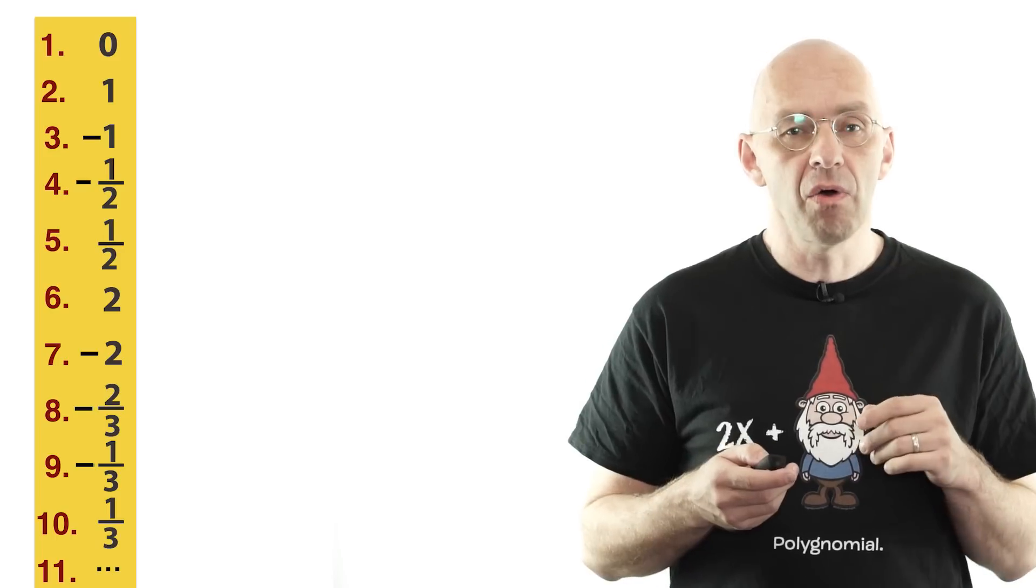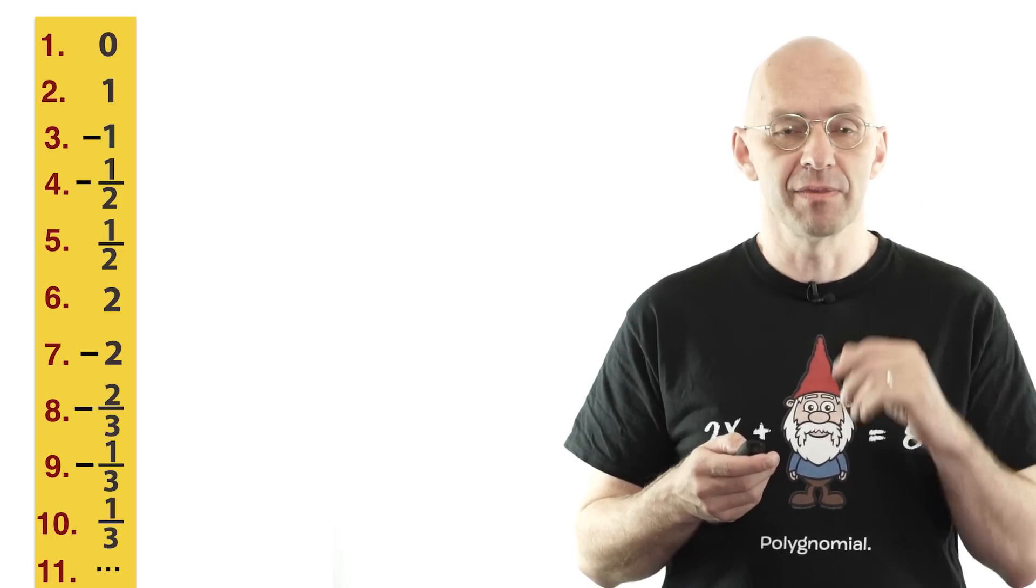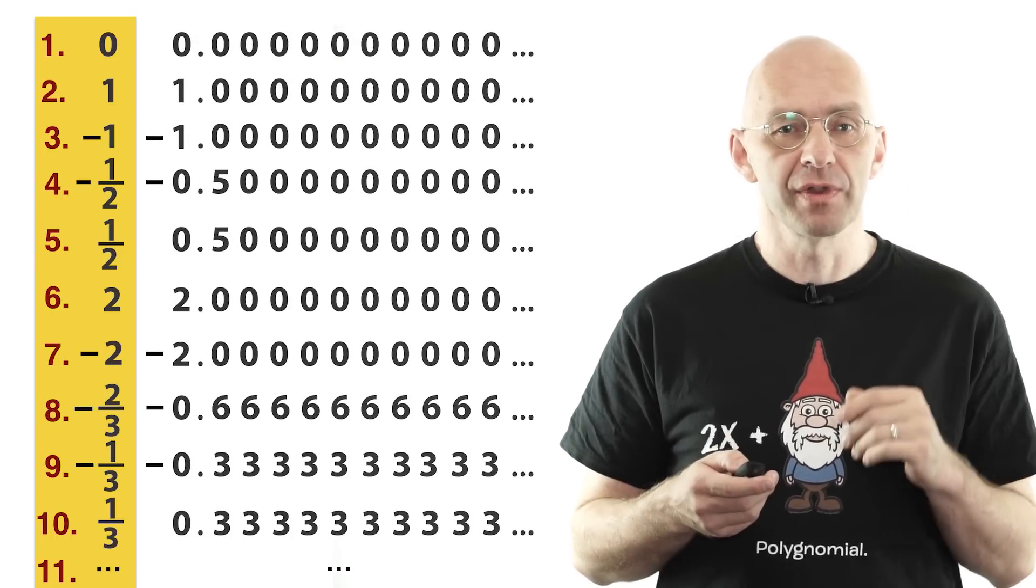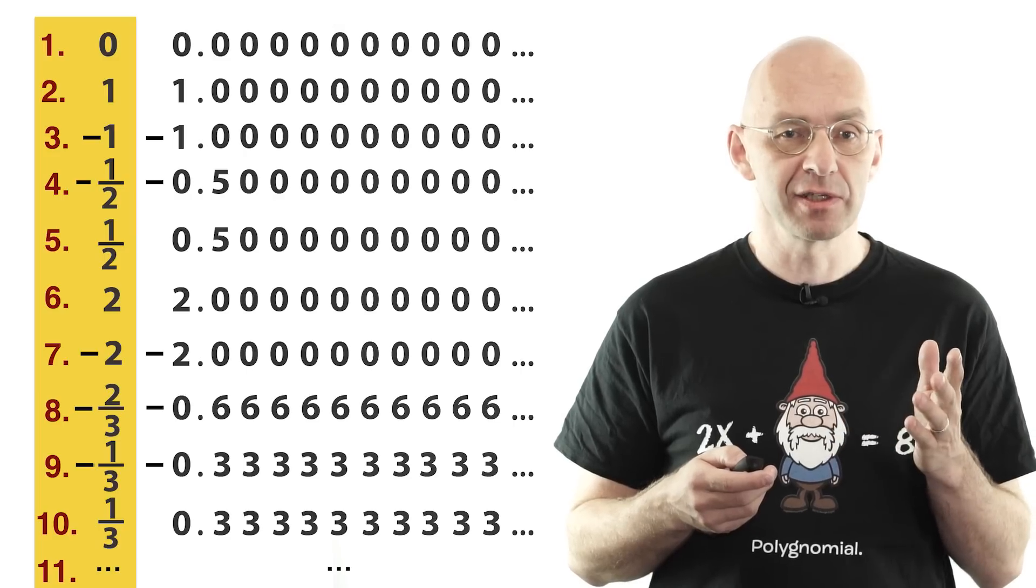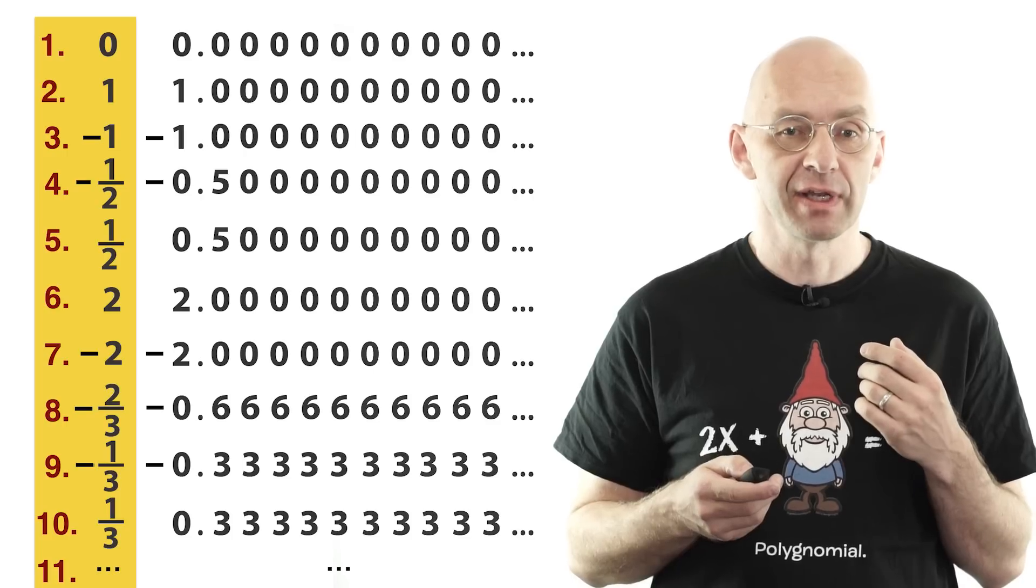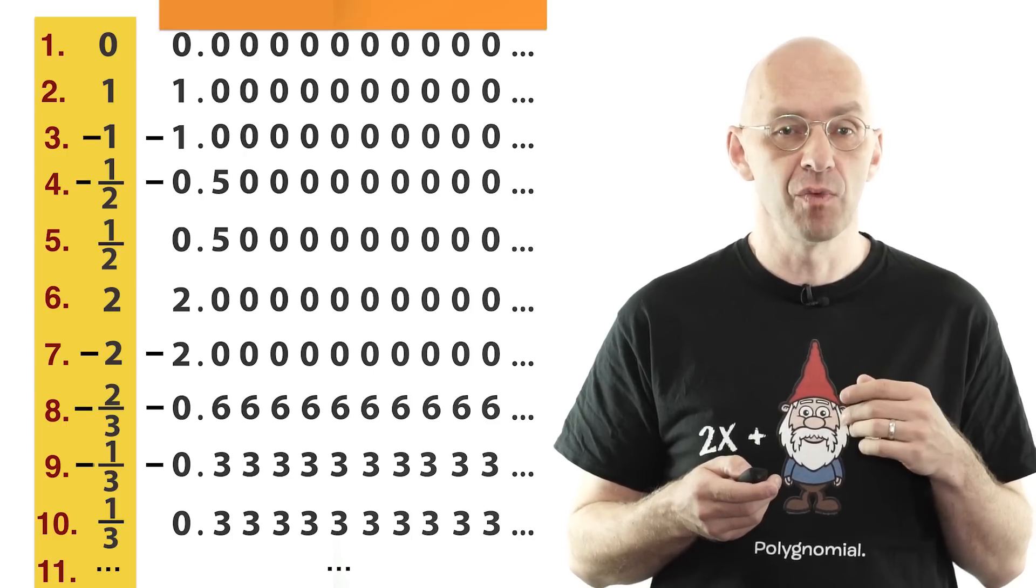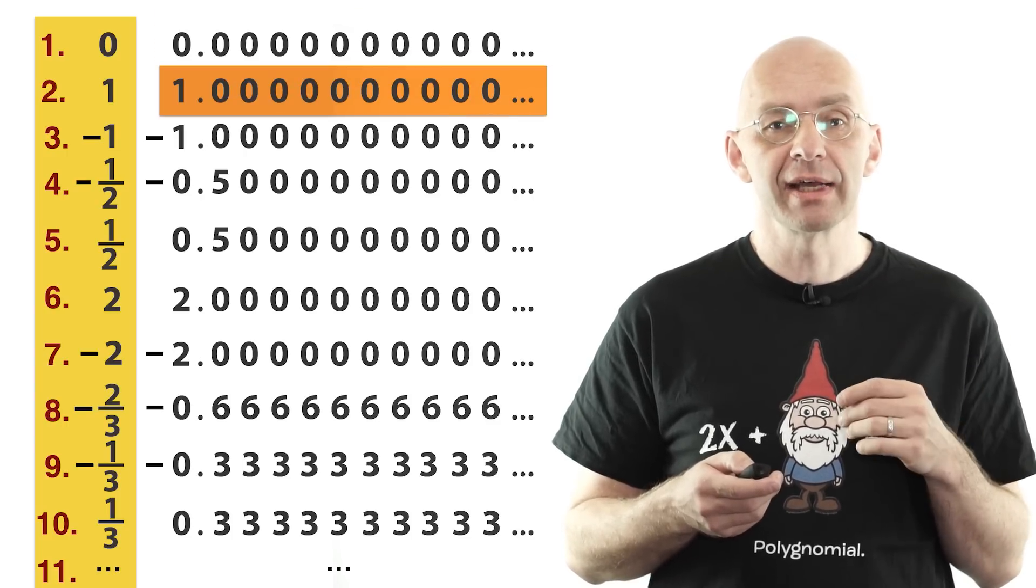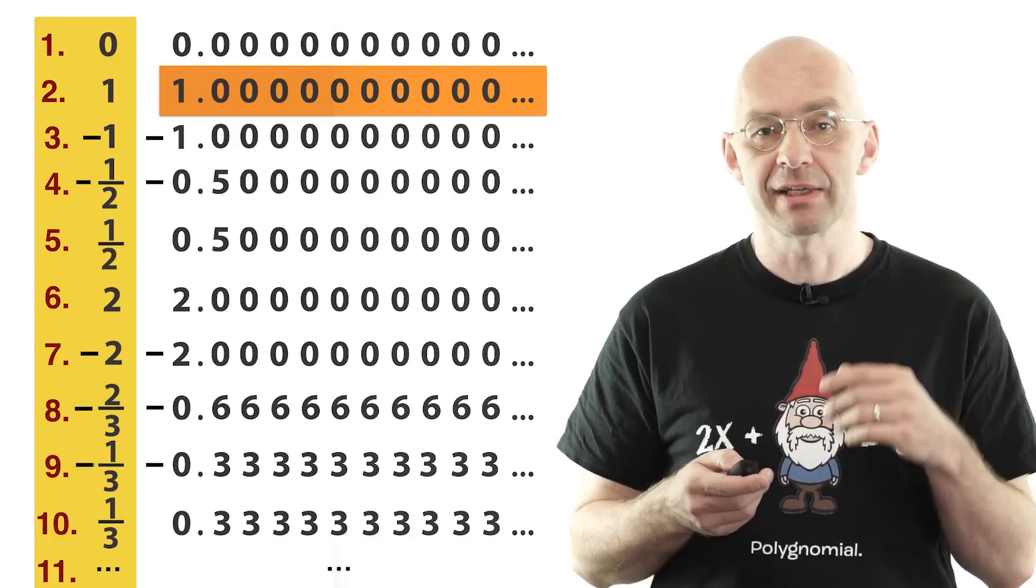Now let's write down all the rational numbers in decimals. You all know that some numbers have two decimal expansions, one ending in a tail of zeros and the other in a tail of nines. For example, 1 is equal to 0.999 and so on.